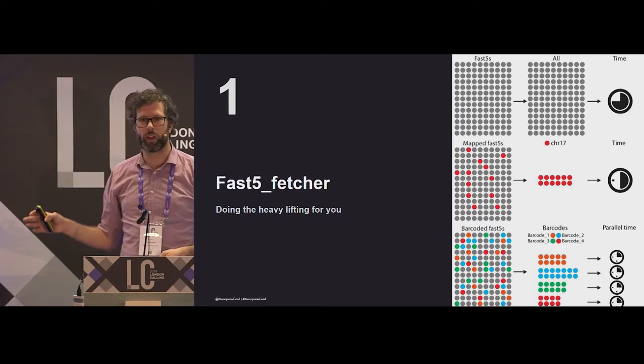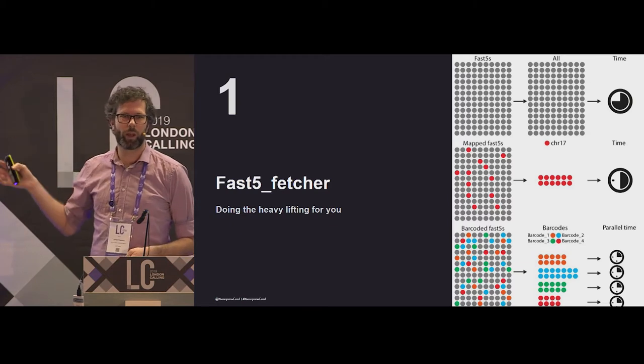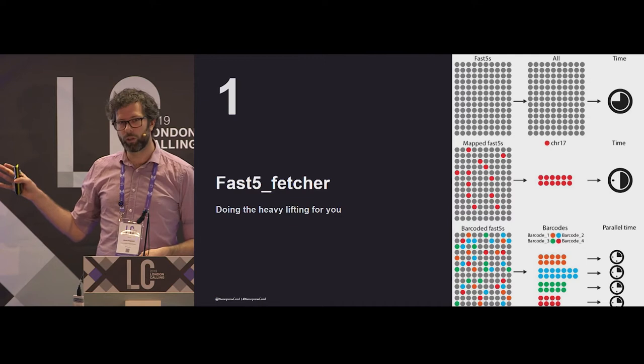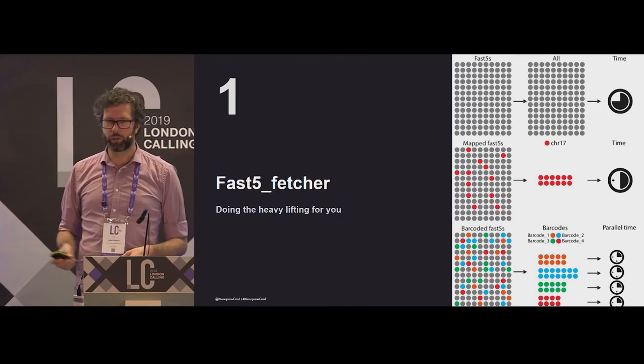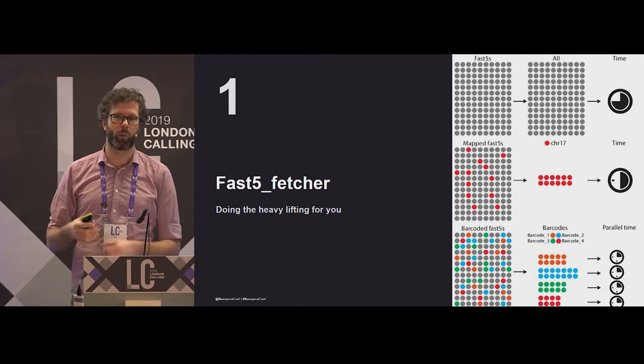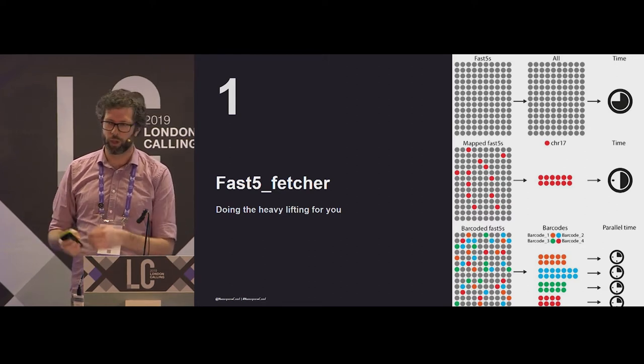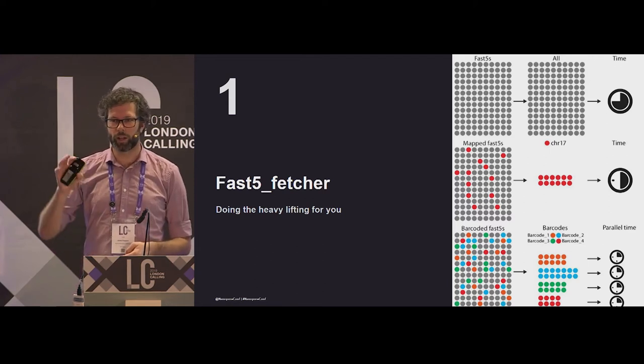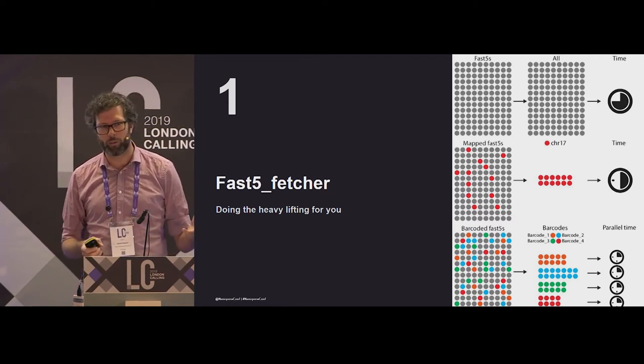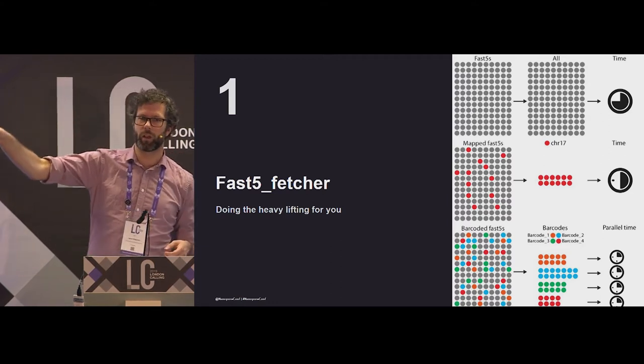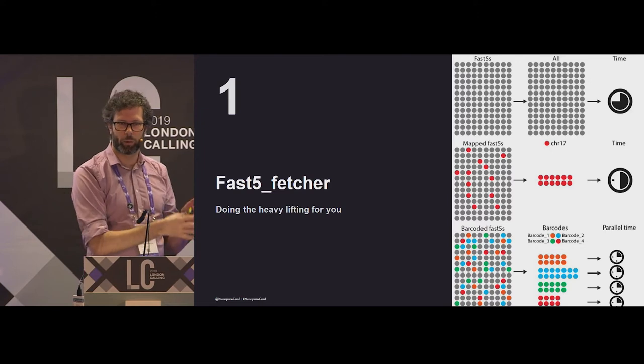You would have to index all of those files, and then it might only use a splattering of them to do the analyses. So one use case for Fast5 Fetcher was to just filter down the reads you're going to use in the first place. Say it might just be one region of the genome. Or maybe it's like one bacterial species that you've identified. You can cut down your FastQ or your alignment file, and then just give that to it. It will go off, grab your Fast5 files, and it speeds up all your analyses.